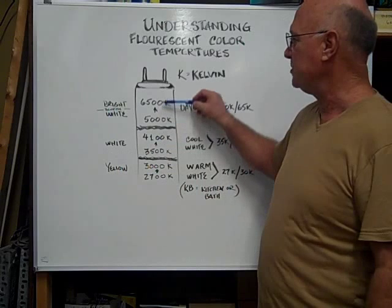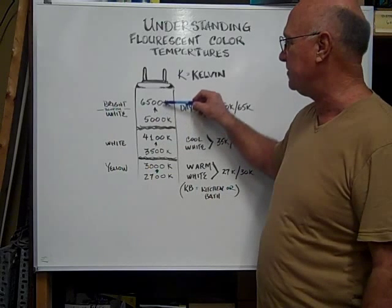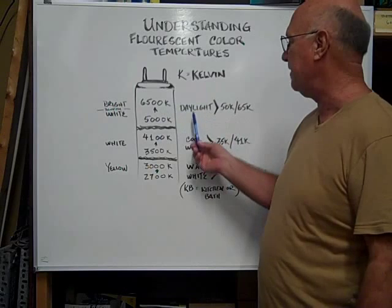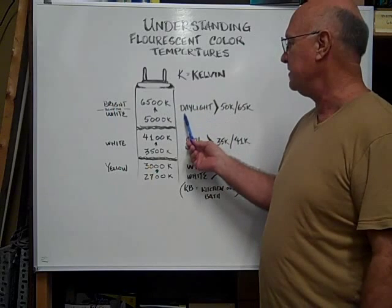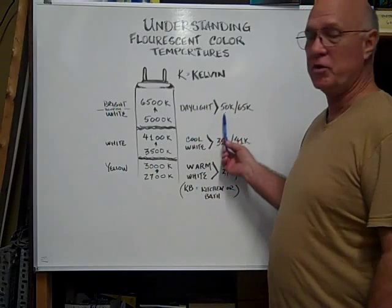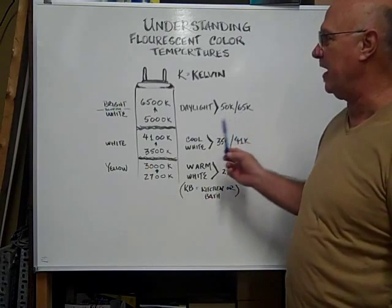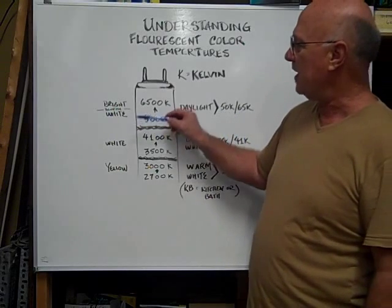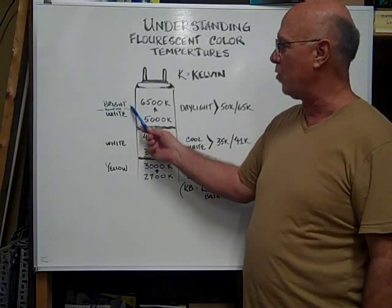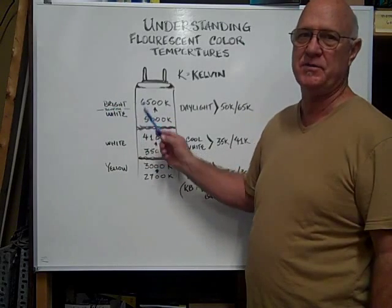Moving on up to 65K — 5000K to 6500K — that is the daylight range. It is indicated on your bulb by 50K or 65K. That color temperature is going to be shown as a bright white or a bluish white.